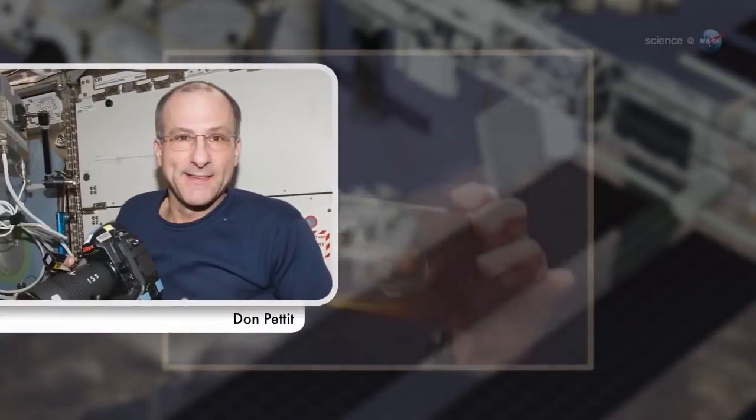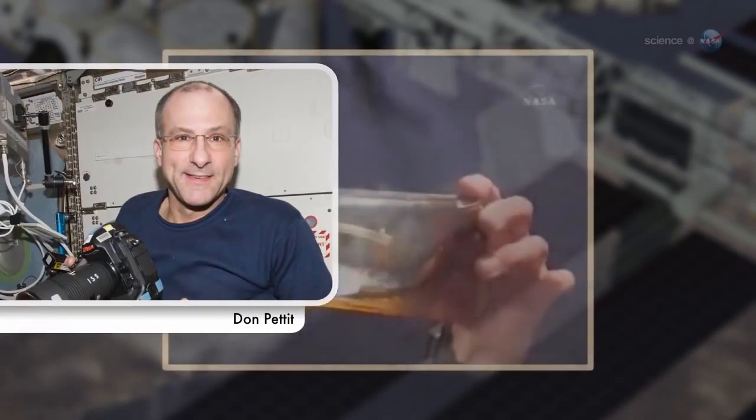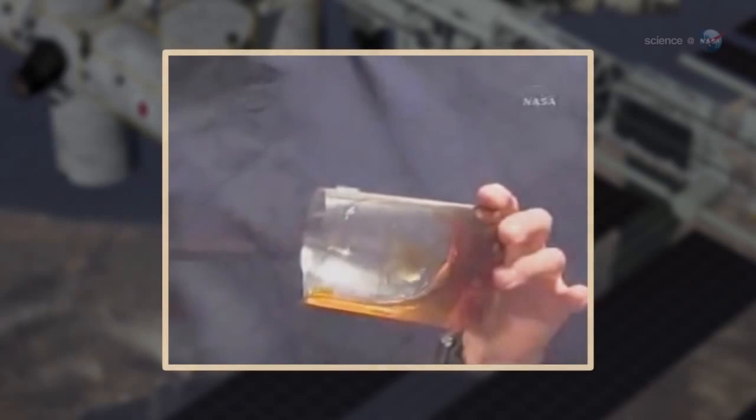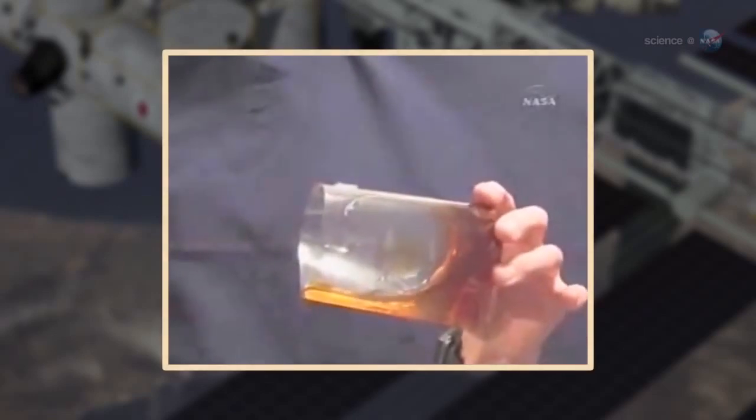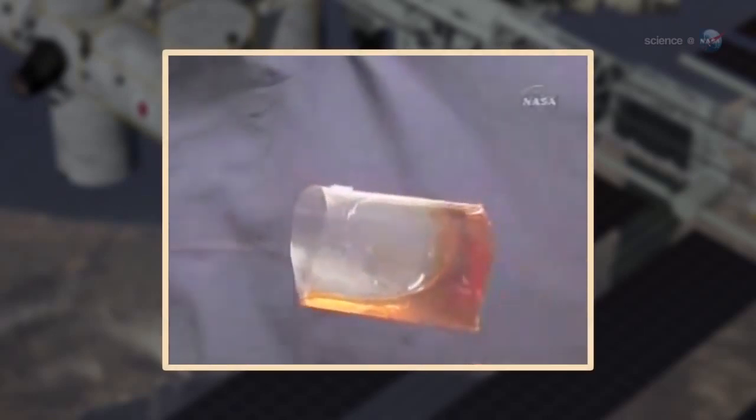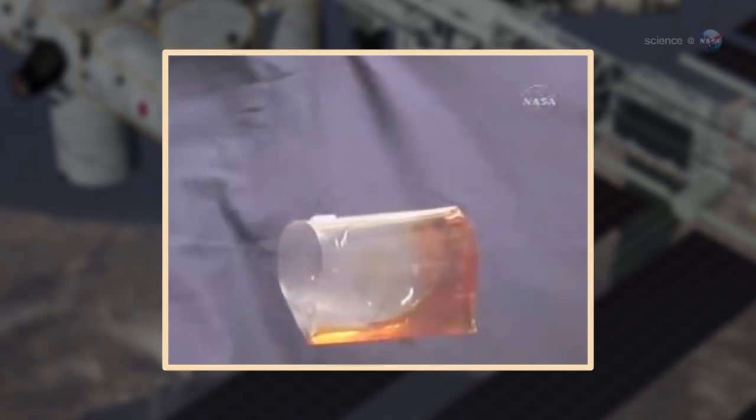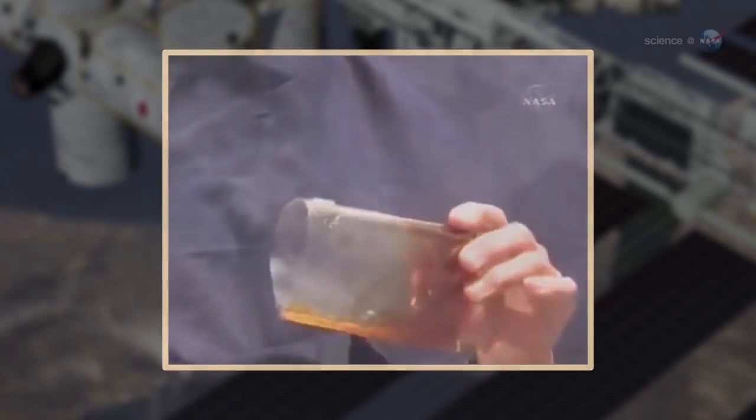Astronaut Don Pettit, who worked with the capillary flow experiment during his time on board the space station, helped invent the cup. And he shares the patent with Weislogel and two mathematicians, Paul Conkiss and Robert Finn, who performed the first theoretical analysis of the phenomenon.